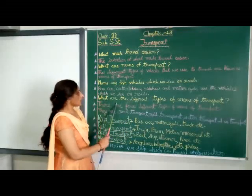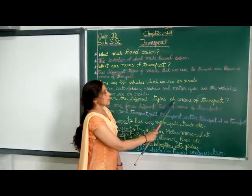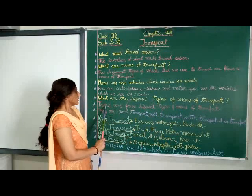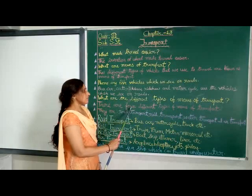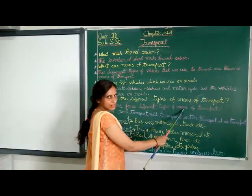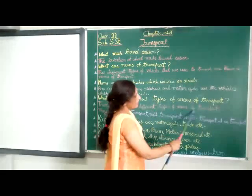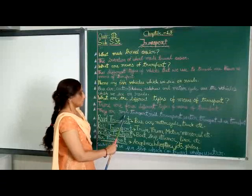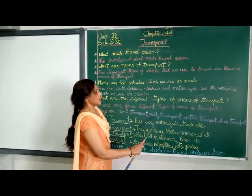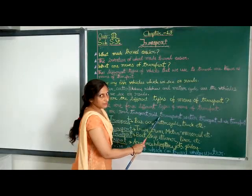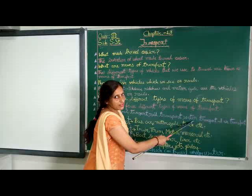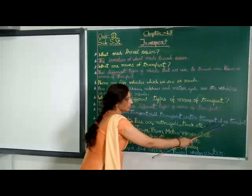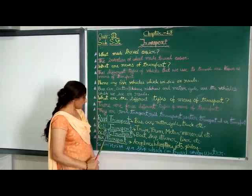What are the different types of means of transport? There are 4 different types of means of transport. They are road transport, rail transport, water transport, and air transport. Let's learn one by one.